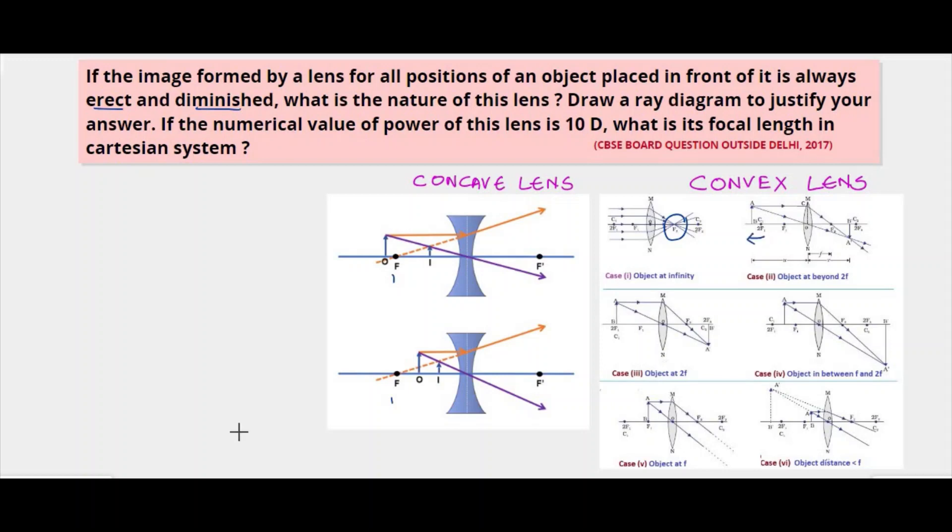When the object is to the left of F1, the image is formed to the left of F2 and it is a reduced image and it's inverted. When the object is at 2F1, the image is also formed at 2F2 and it's of the same size and inverted.